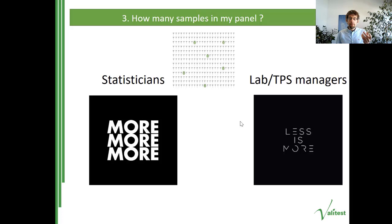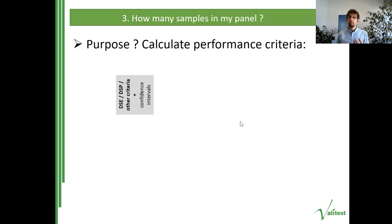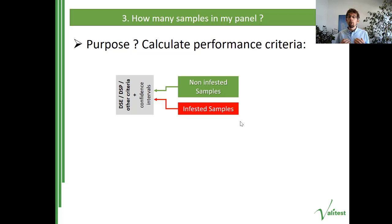For that, we must think about what performance criteria need to be evaluated. The first group of characteristics are the classical ones: diagnostic specificity, diagnostic sensitivity, and what we will propose is to expand these calculations with other criteria that give a good overview of the test's performance — always based on the matrix using true positives, true negatives, false positives, and false negatives. To calculate this group, we rely on the presence in the sample panel of non-infested samples and infested samples.